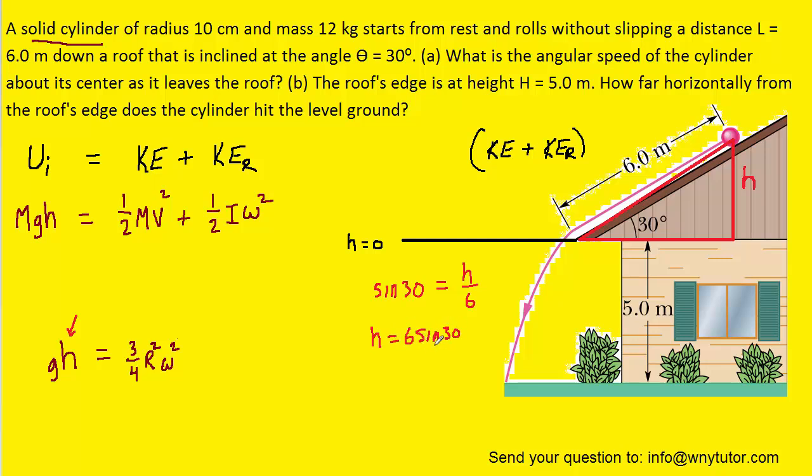And actually, we can go a little further. Sine of 30 is just one-half, so it's 6 times a half, which is just 3. So something to keep in mind is that the height will be equal to 3.